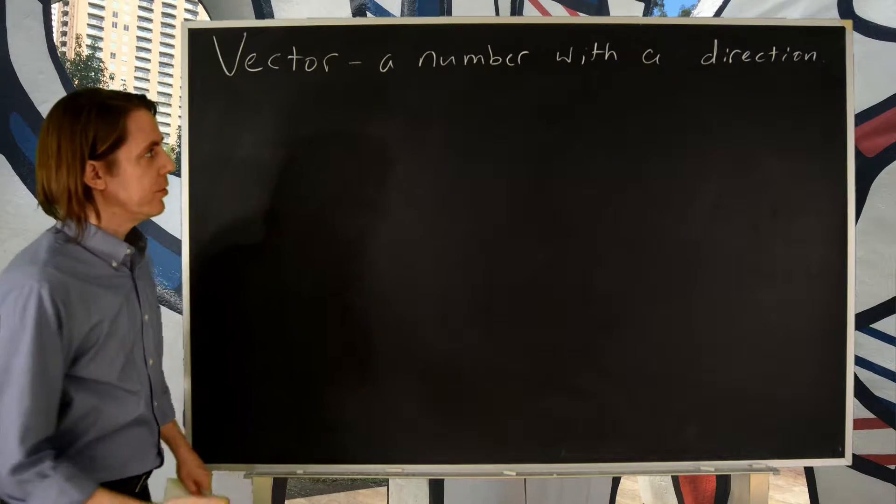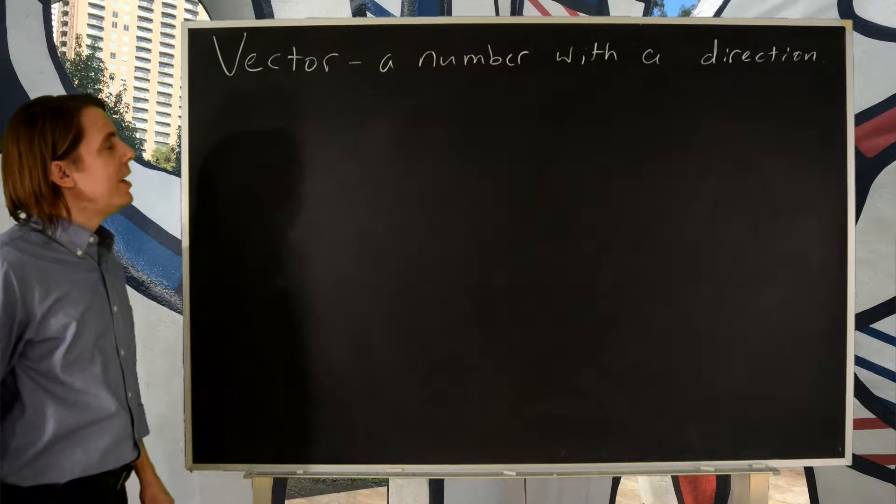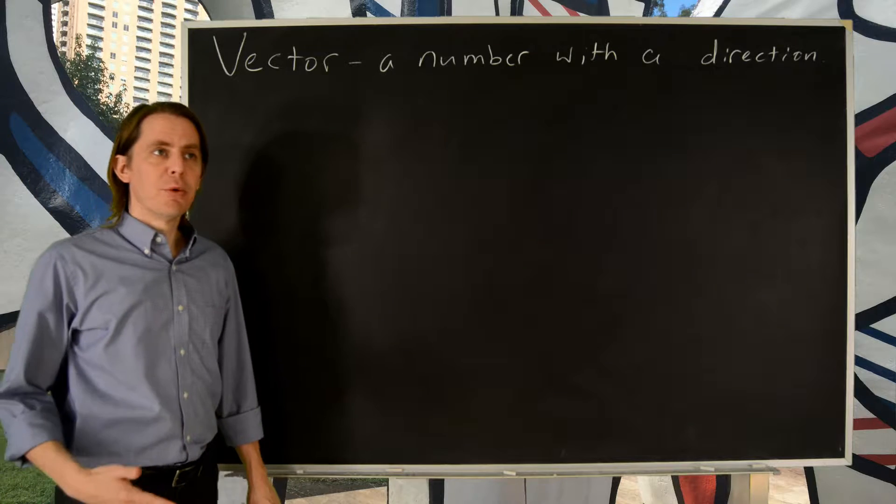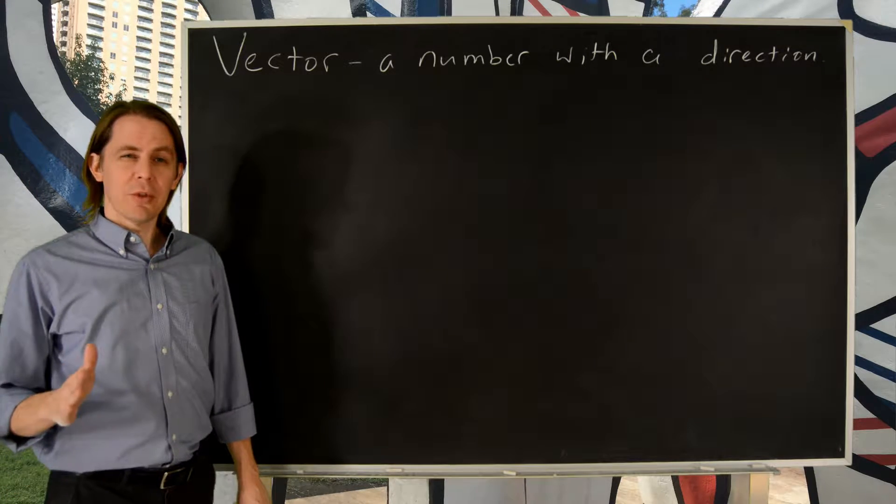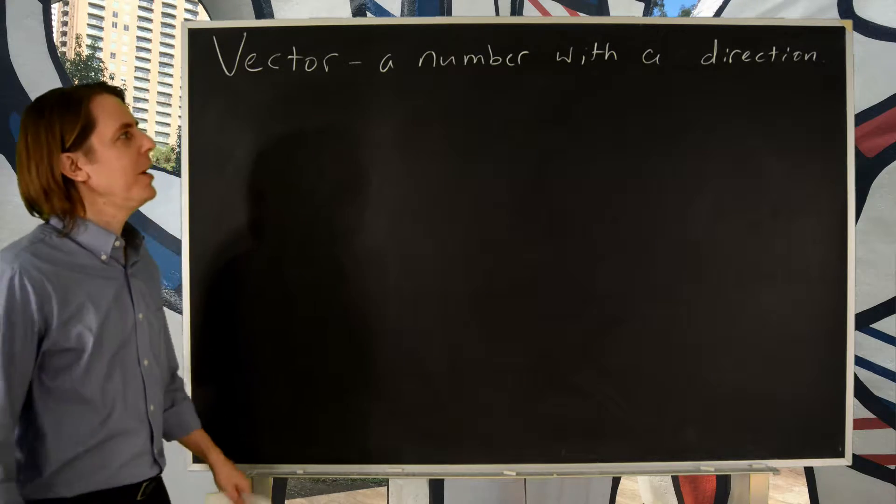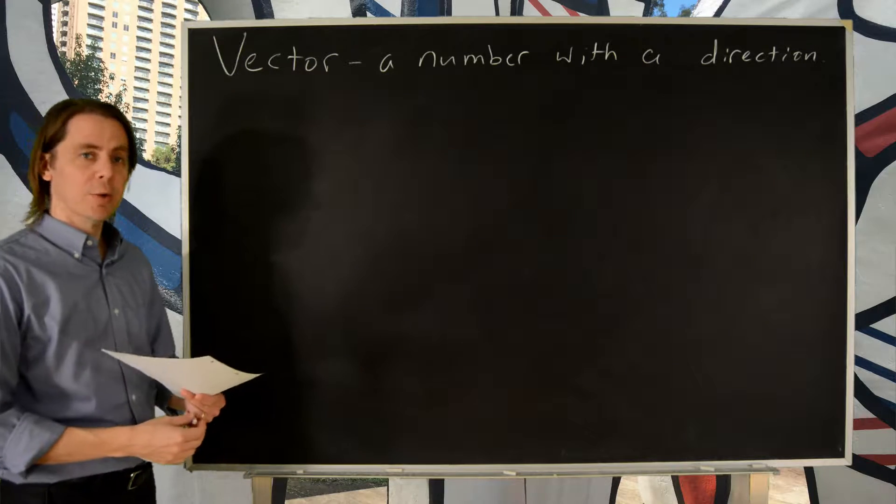In physics, we use a lot of vectors, so let's talk about them a little bit. As you've probably heard, a vector is a number with a direction. Now we have to think about how we do that mathematically. We can't just say a number with a direction.